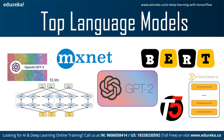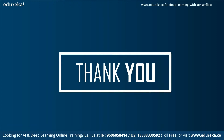Next we have ELMo, also known as Embeddings from Language Models — a deep contextualized word representation that models both syntax and semantics as well as linguistic context. Developed by AllenNLP, ELMo has been pre-trained on a large text corpus and learns from bidirectional language models. ELMo can easily be added to existing models, drastically improving performance across NLP problems including question answering, textual entailment, and sentiment analysis. With this, we come to the end of the session — if you have any queries, please mention them in the comment box below. Goodbye and take care.